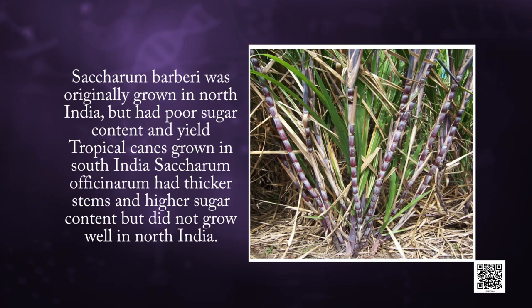Sugarcane: when we talk about sugarcane, two species come to mind. Saccharum barbari was originally grown in North India but had poor sugar content and yield. Tropical cane grown in South India, Saccharum officinarum, had thicker stems and higher sugar content but did not grow well in North India. These two species were successfully crossed to get sugarcane varieties combining the desirable qualities of high yield, thick stems, high sugar content and ability to grow in the sugarcane areas of North India.